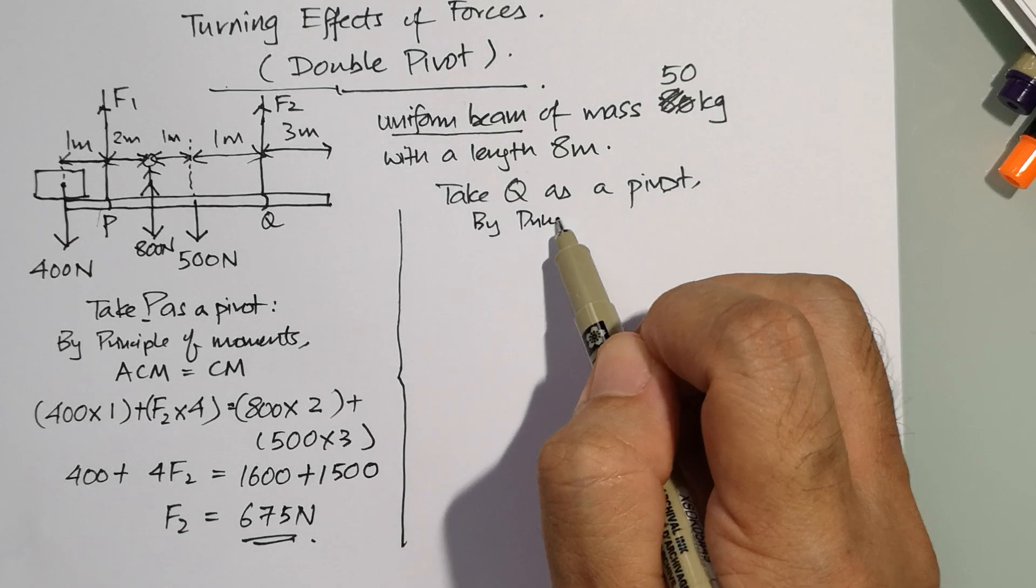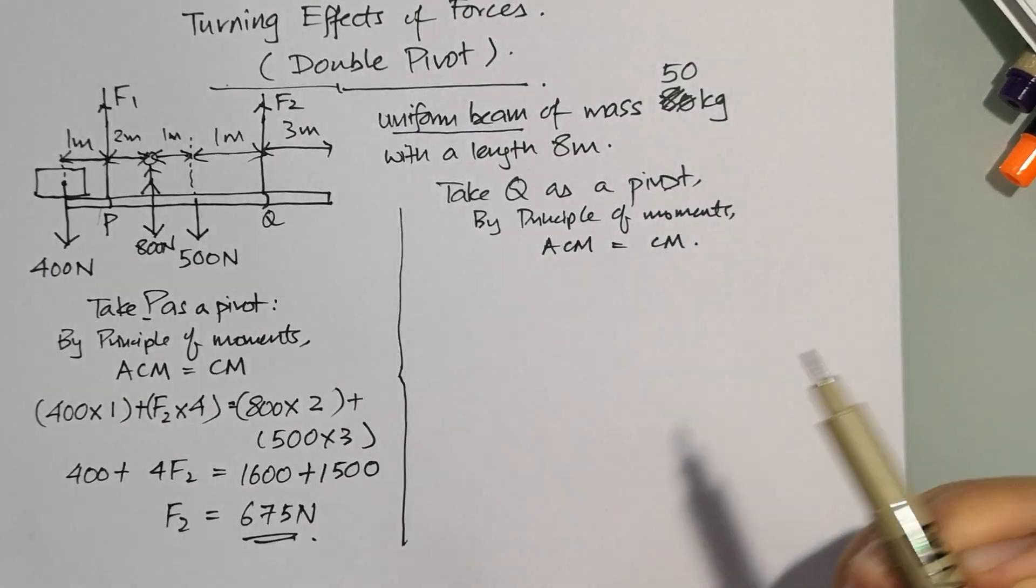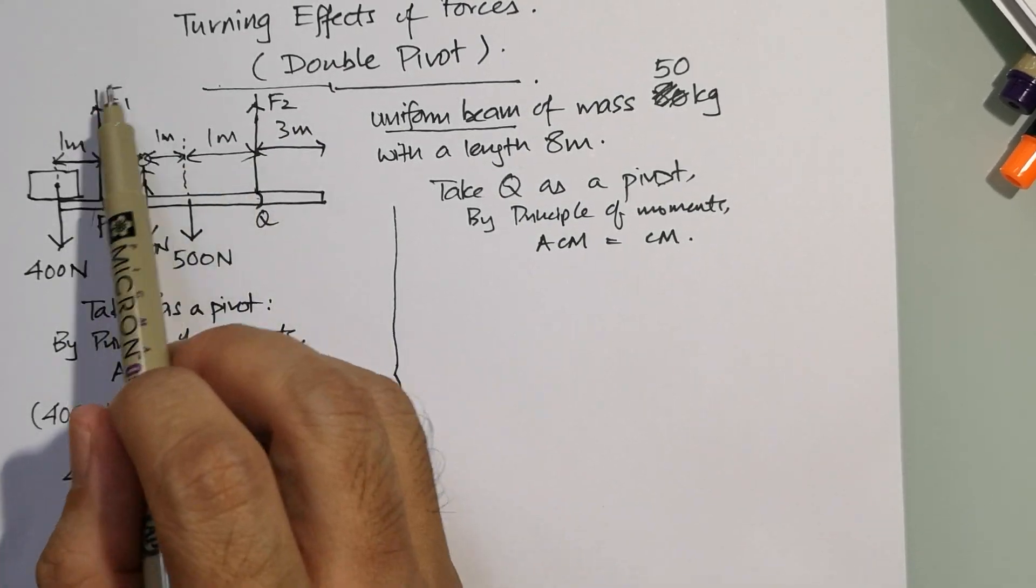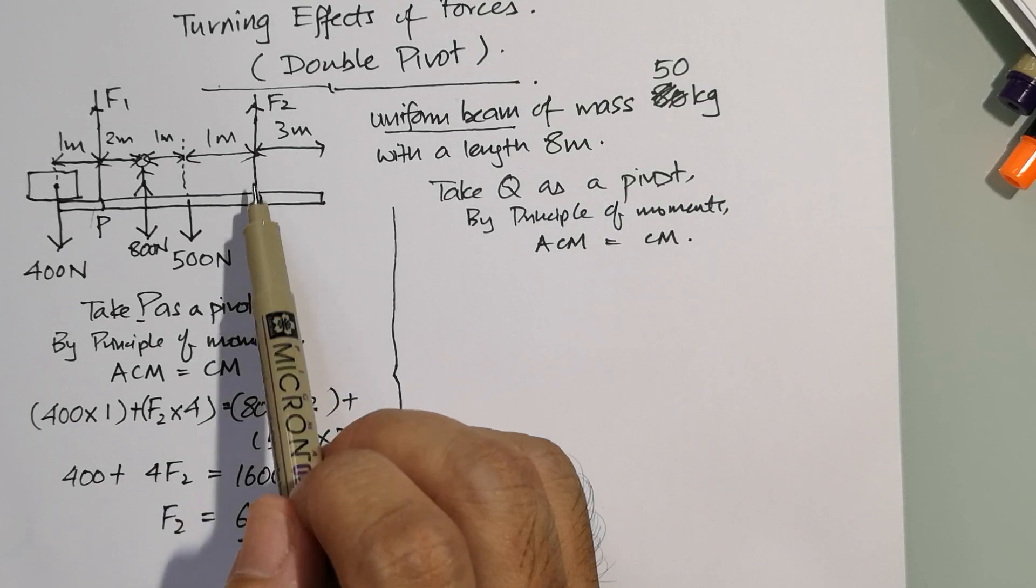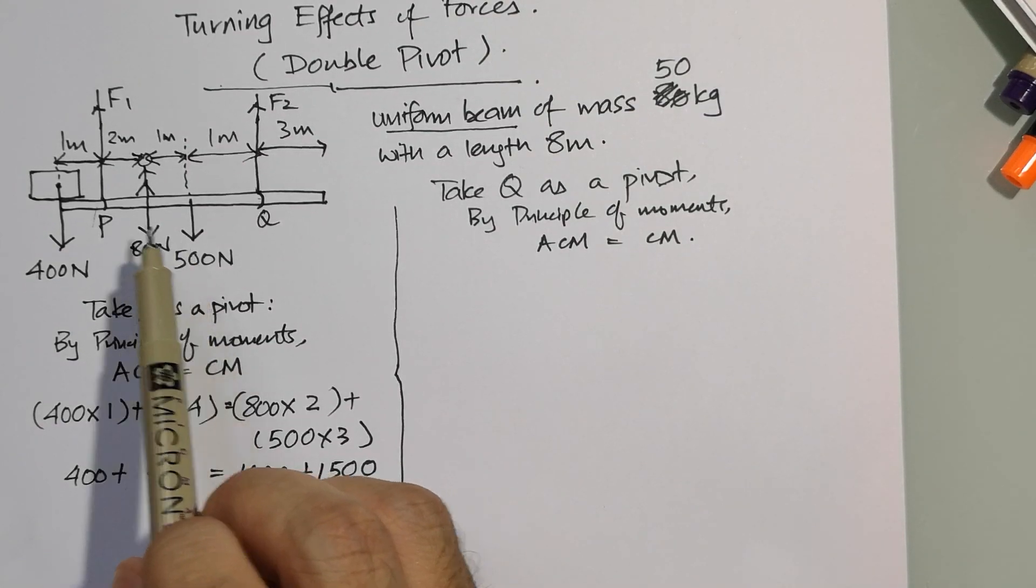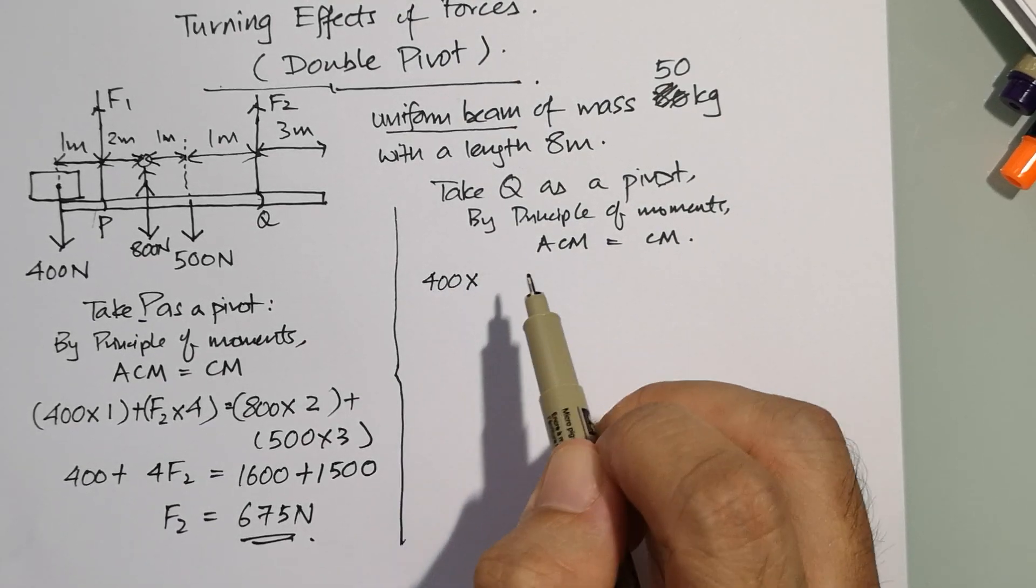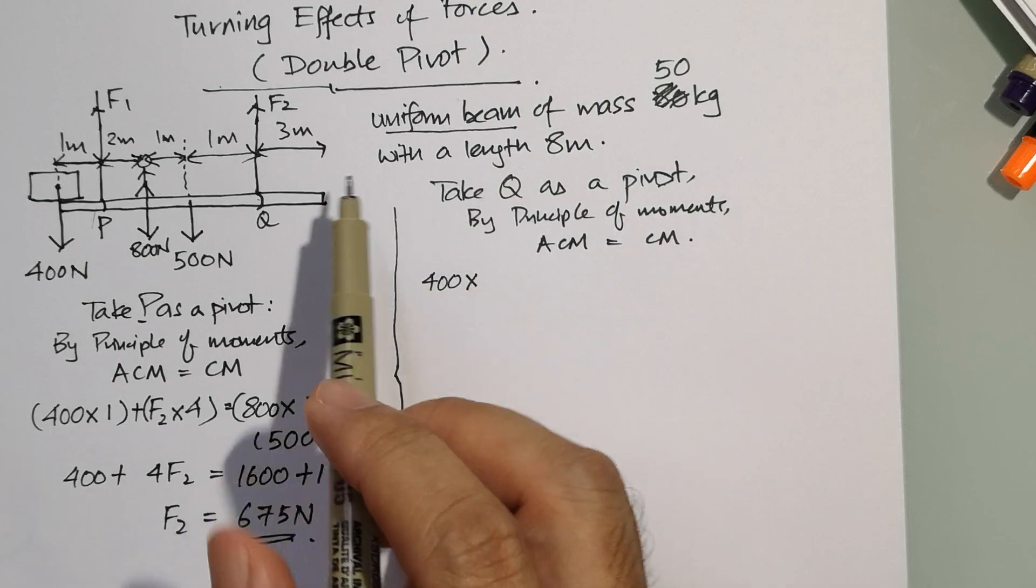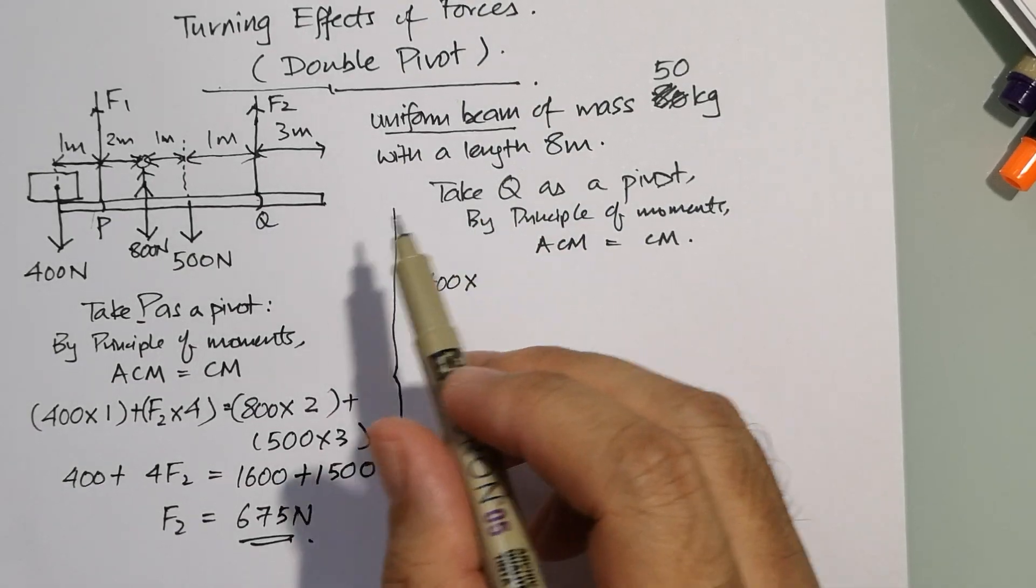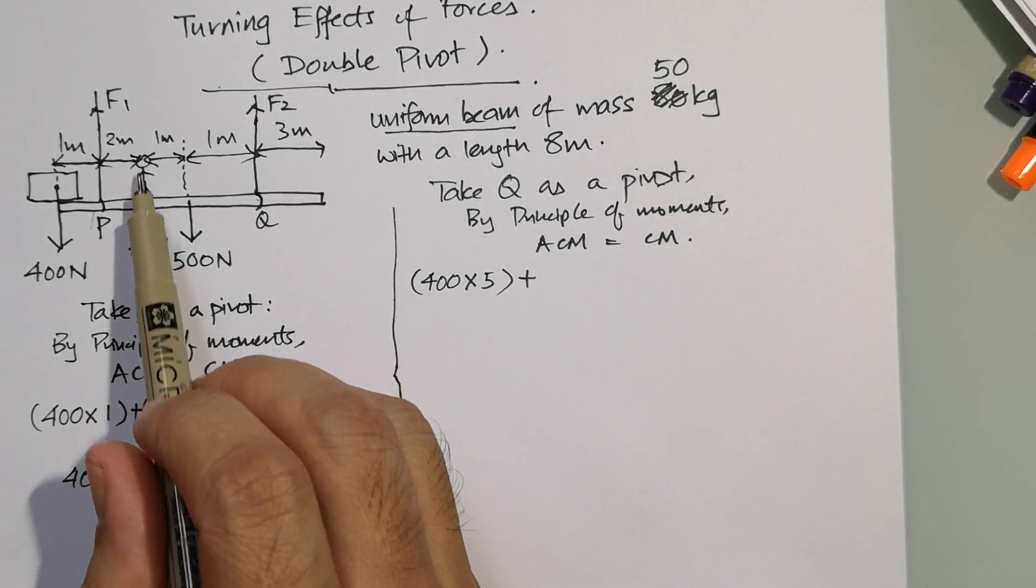By principle of moments: anti-clockwise moments equal clockwise moments. This is the pivot now, so you ignore F2 and we have to find F1. When this happens, 400, 800, 500 becomes the anti-clockwise moments and F1 becomes the clockwise moments. 400 times—now the length is no longer 1, it's actually from Q because Q is a pivot—so it's 1 plus 2 plus 1 plus 2 plus 1 plus 1: 400 times 5, plus 800 times 2, plus 500 times 1.